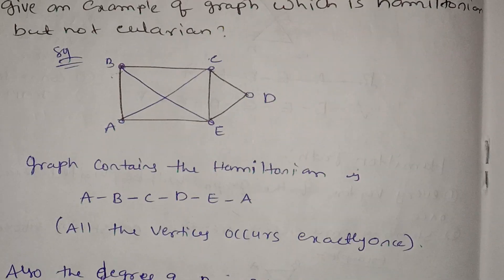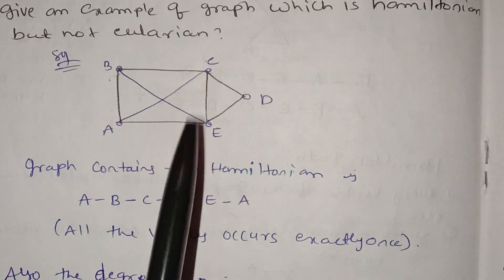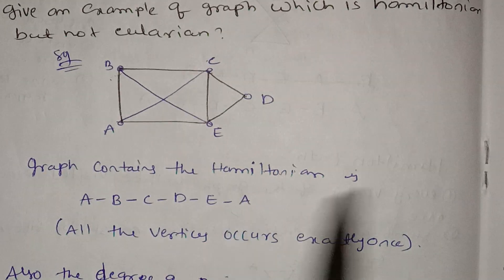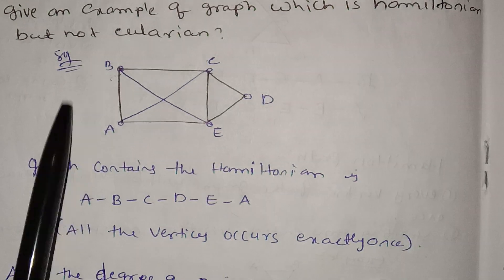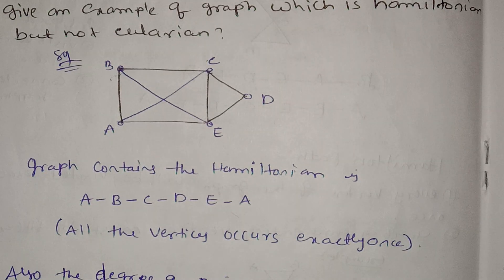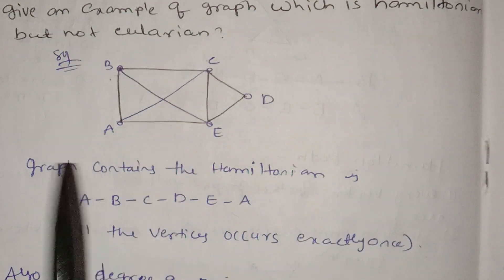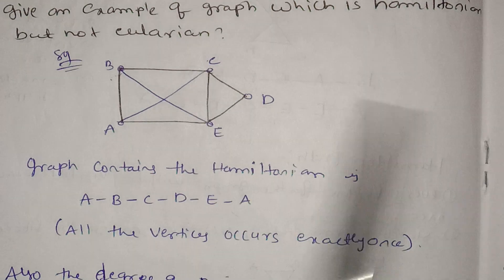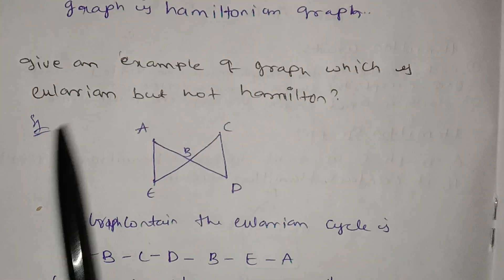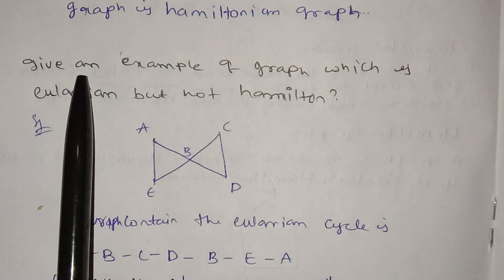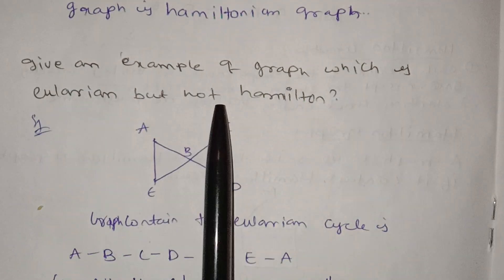We will try the example of a graph which is Hamiltonian but not Eulerian, and then an example of a graph which is Eulerian but not Hamiltonian.